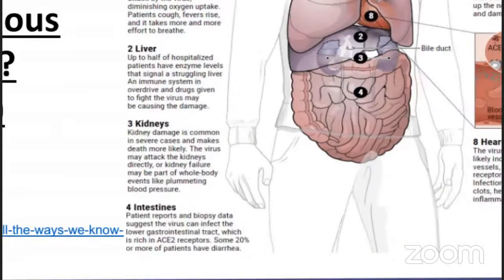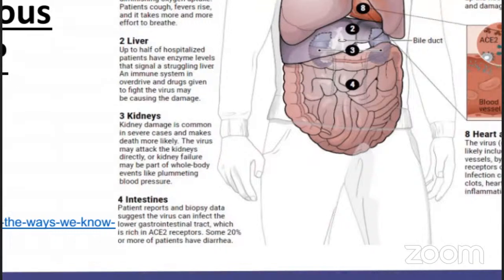Third, the kidney. Kidney damage is common in severe cases and makes death more likely. The virus may attack the kidneys directly, or kidney failure may be part of a whole-body event like plummeting blood pressure. Fourth, the intestine. Patient reports and biopsy data suggest the virus can infect the lower GI tract, which is rich in ACE2 receptors. Some 20% or more of patients have diarrhea.